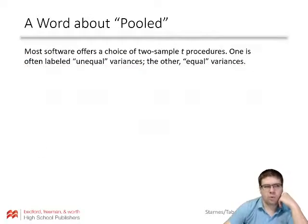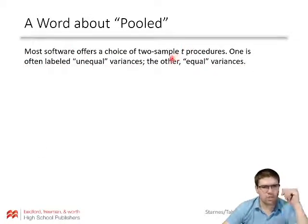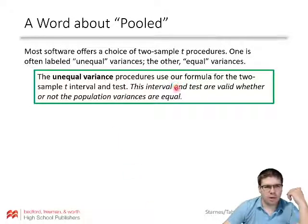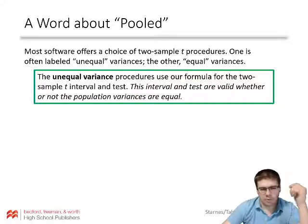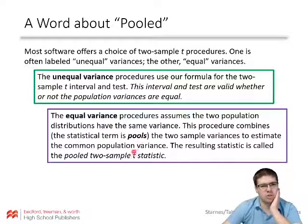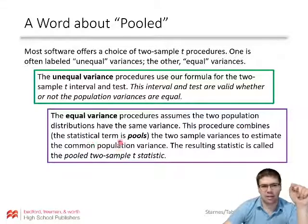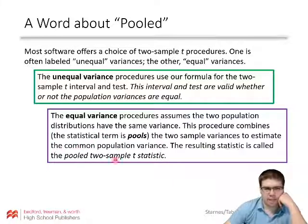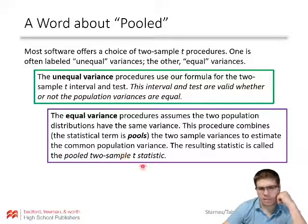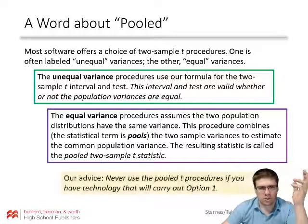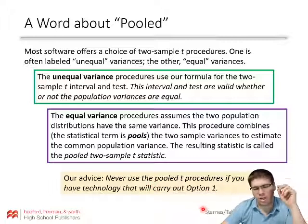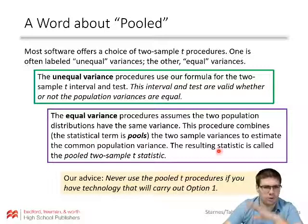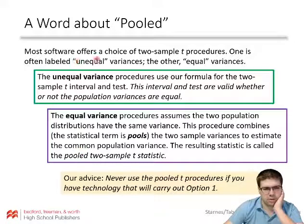A word about pooled: most software offers two choices — unequal variances and equal variances. The unequal variance procedure uses our formula for the two-sample t-interval and test, and is valid whether or not the population variances are equal, so it will always work. The equal variance procedure assumes the two populations have the same variance and pools the two-sample variances to estimate a common population variance — this is called a pooled two-sample t-statistic. The advice is to never use pooled t-procedures if you have technology for the unequal variance option. Just use the big degrees-of-freedom formula via technology.